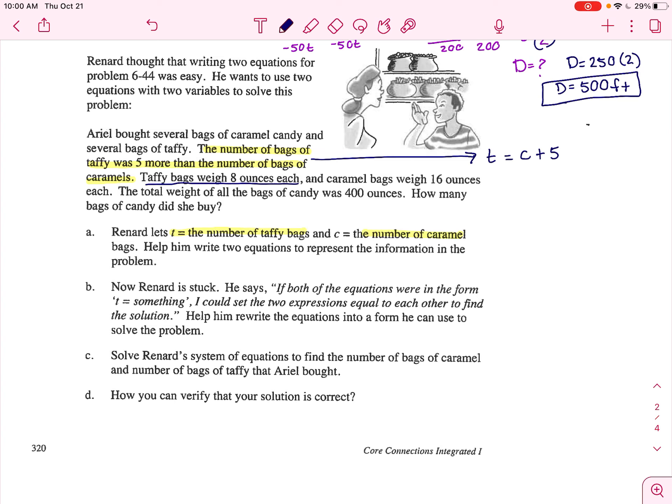And then it also gives us something about all of the ounces. The taffy bags weigh eight ounces each. The caramel bags weigh 16 ounces each, and they buy a total of 400. So we need to write another equation using T and C, and then we're going to use a method to solve for how many bags of taffy did you buy, how many bags of caramel did you buy.